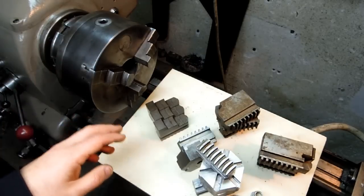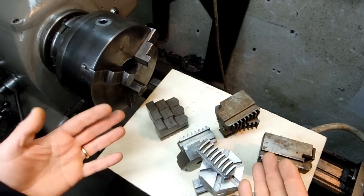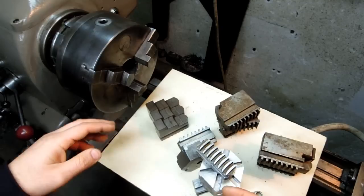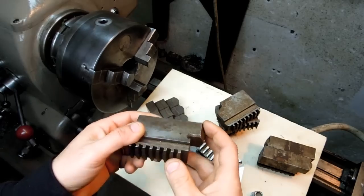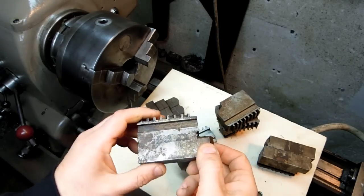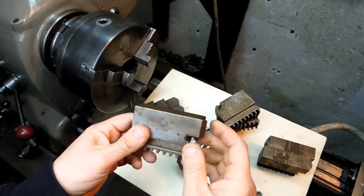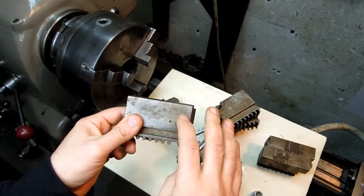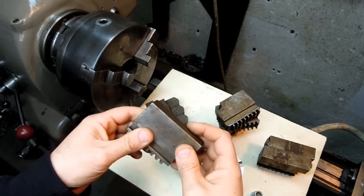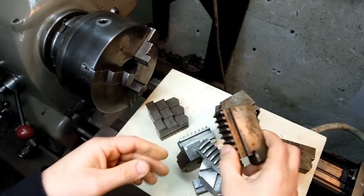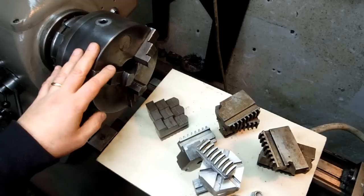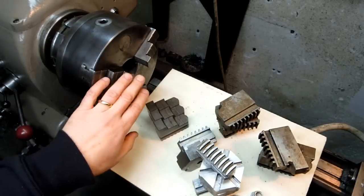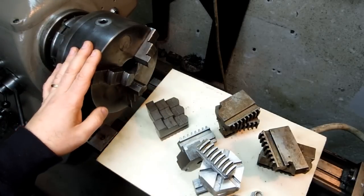Now before we get too far, what the heck are soft jaws? What can you do with soft jaws? Soft jaws are pretty much what the name implies, they're jaws that haven't been hardened. And the reason that's good is you can cut them. So you can cut any form you want into these jaws to accommodate the part that you're holding. Contrary to popular belief and what you might actually see on my lathe, hard jaws are not supposed to be cut. So I ask you to ignore any battle scars you might see here.